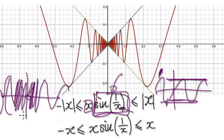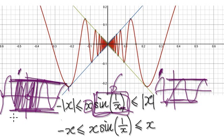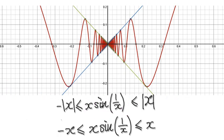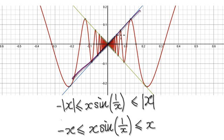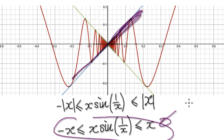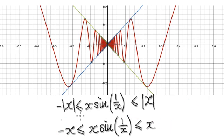This thing here will always be trapped in between positive 1 and negative 1. So the largest value that this thing here could be is 1, and the lowest that this thing here could be is negative 1. So you can say that this thing here is always less than this thing here — it's always less than x.